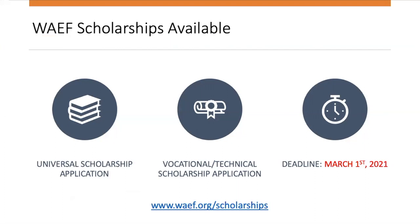For those of you joining us today who are new and may not have been at our first webinar, a little bit about our scholarships. We have two scholarship applications, and if students are awarded they are eligible to apply for renewal for up to four undergraduate years as long as they meet the renewal criteria. The first application is the universal scholarship application, and this is for students who have been raised in the tree fruit industry — meaning their parents currently work in the industry up in the orchards, in the warehouses, service providers, and so forth.